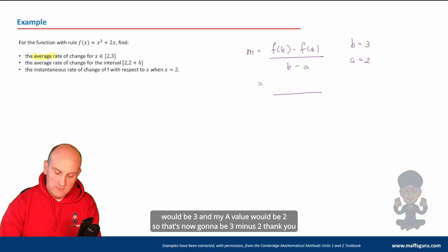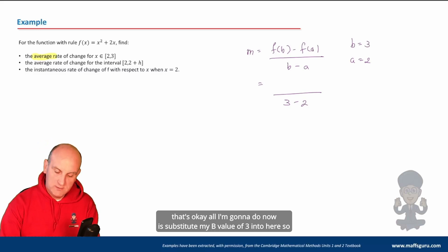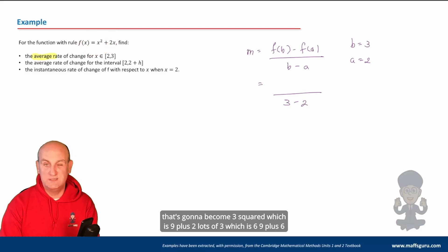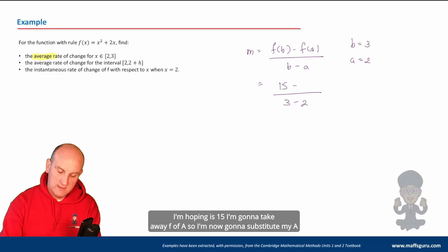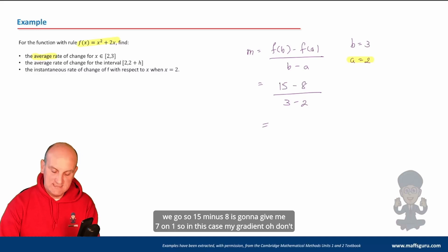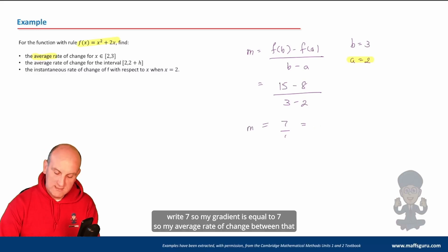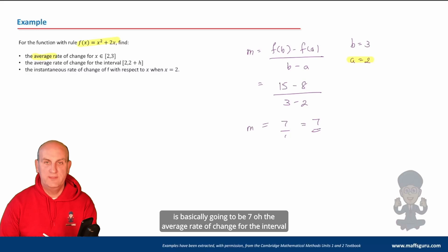So my b value is three and my a value is two. Now f(b): substitute three into the function — three squared is nine, plus two lots of three is six, nine plus six is fifteen. Then f(a): substitute two — two squared is four, plus two times two is four, so eight. Fifteen minus eight gives me seven on one, so my gradient — my average rate of change — is equal to seven.